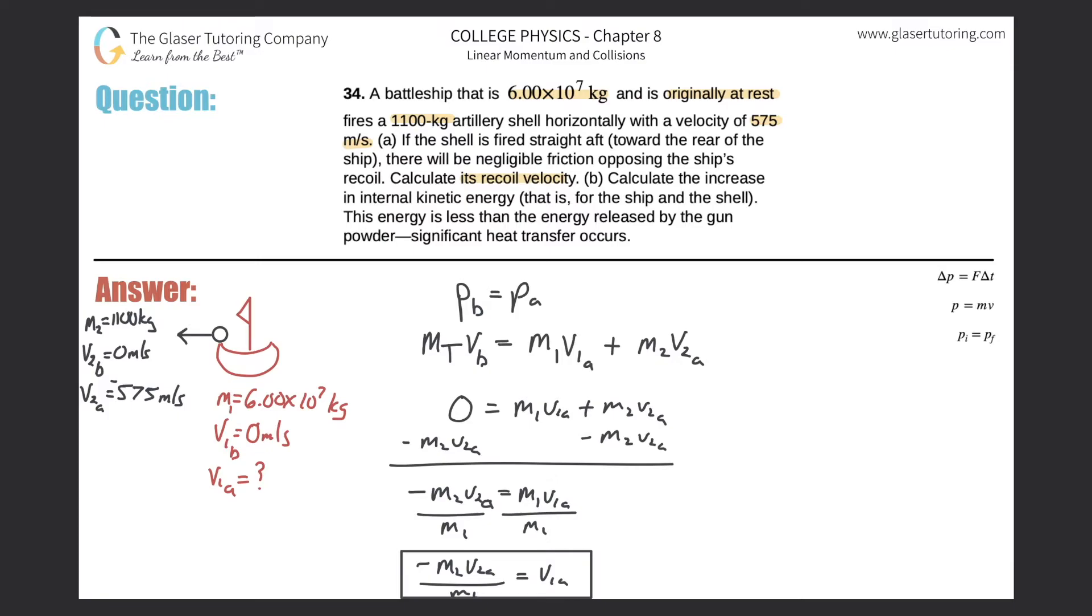All we've got to do now is plug in the values. So V1A is equal to negative M2, so negative 1,100, multiplied by V2A, which is negative 575, all divided by M1, the mass of the ship, 6.00 times 10 to the 7th. And just throw it into the calculator. So negative 1,100 times negative 575, all divided by 6 times 10 to the 7th. And we get a value of 0.0105, and that is meters per second.